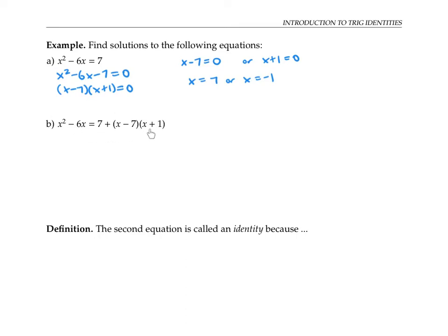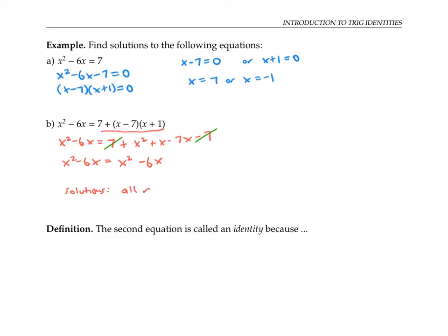Next, let's look at this more complicated equation. I'm going to try to solve that for x by multiplying out the right hand side, then combining terms. That gives me x squared minus six x on both sides. Well, x squared minus six x is equal to x squared minus six x — that's true no matter what I plug in for x. And therefore, all values of x satisfy this equation. We can say that the solution set is all real numbers.